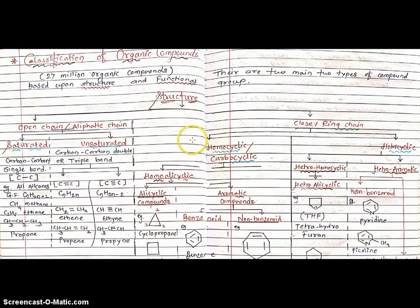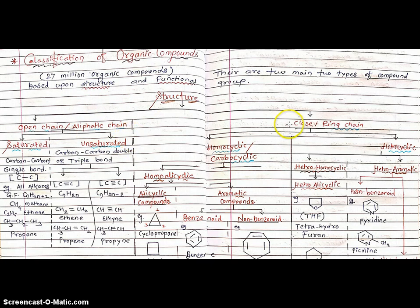Today we have to do a detailed study of the classification of organic compounds based upon Structure. In case of Structure, organic compounds like hydrocarbons are further classified into two main types: one is Open Chain Structure, also known as Aliphatic Structure, and second is Closed, Packed, or Ring Chain Structure, also called Ring Chain Hydrocarbons.